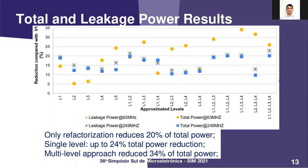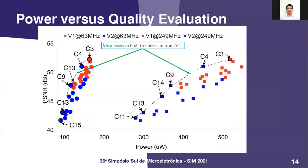The refactorization alone reduces power significantly due to the decrease in the number of adders used in V2. When approximation is applied, the power consumption reduces even more because some gates are removed from adders. Taking into consideration only power or area to select the best case can lead to quality loss. So we built the Pareto's Frontier for both frequencies and found that V2 has a better trade-off between power and PSNR quality. It also shows that V2 is the most suitable option targeting power optimization.